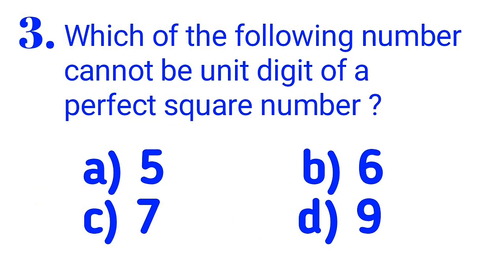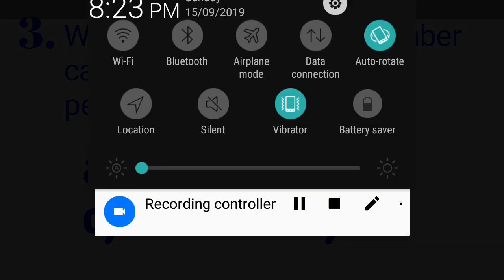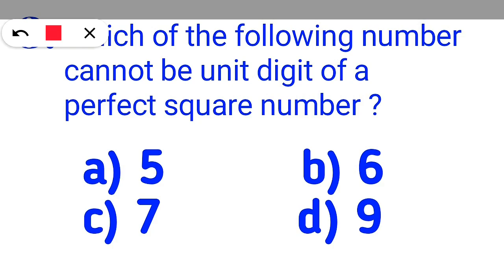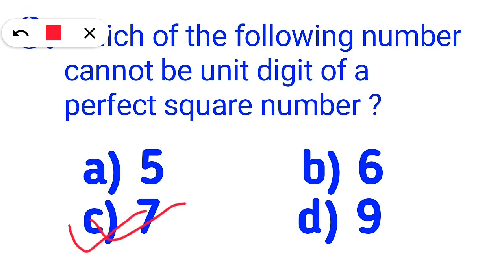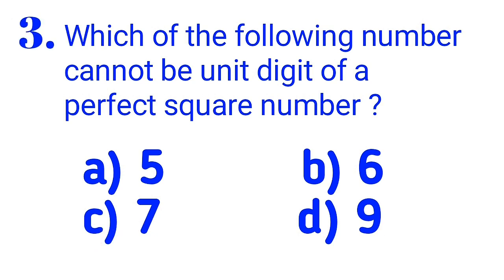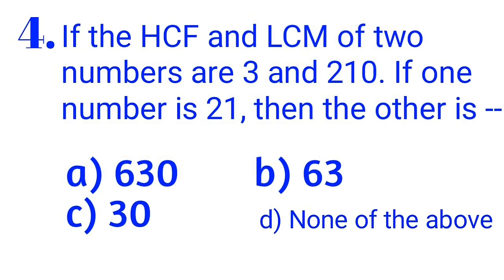Number 3: Which of the following numbers cannot be a unit digit of a perfect square number? The correct answer is noted.